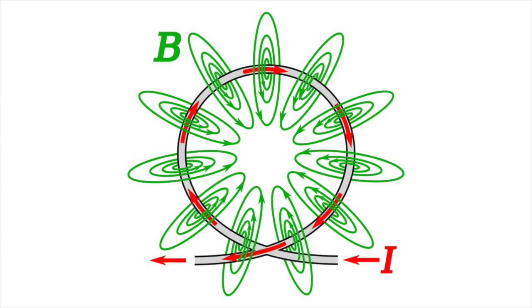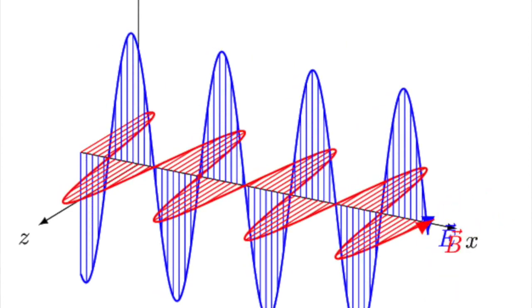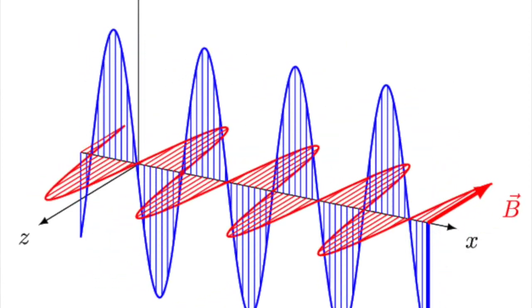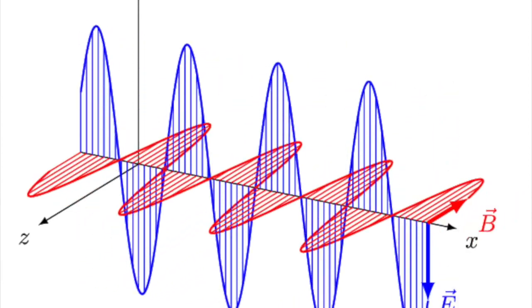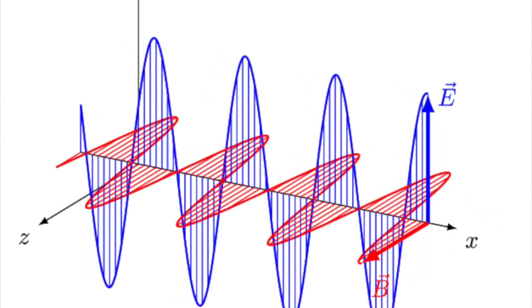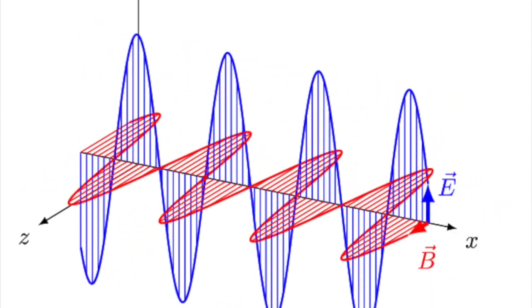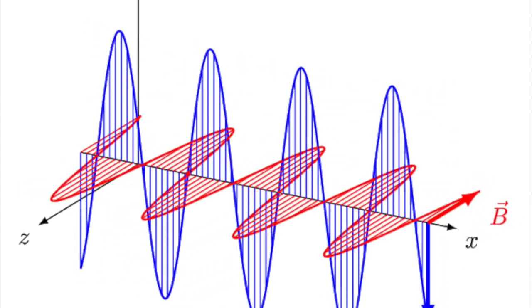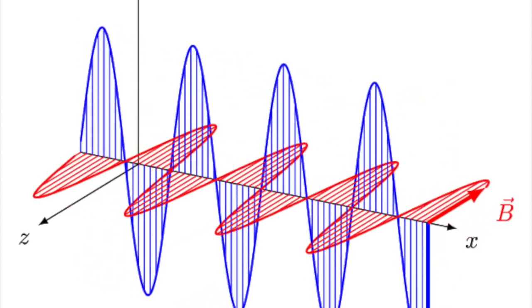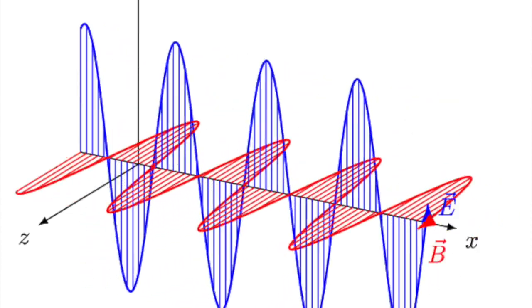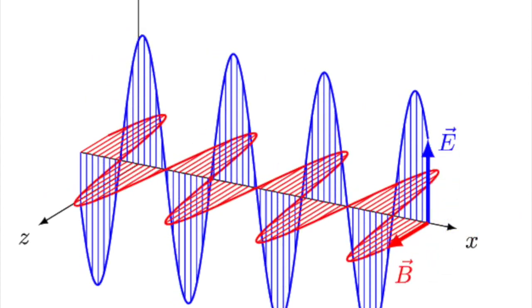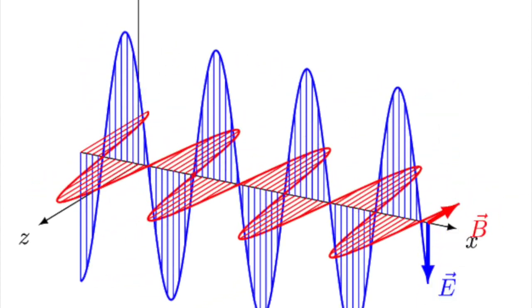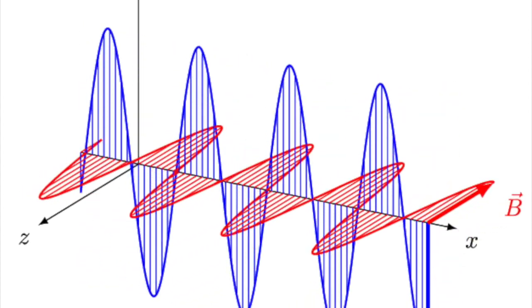The two can't exist apart, and together they produce a marriage called an electromagnetic field. As Maxwell's equations make clear, change the electric field and the magnetic field responds by changing as well. The disturbance to the magnetic field then causes a further shift in the electric field and so on, back and forth, action and reaction. Maxwell was aware of the implication of this two-way feedback.